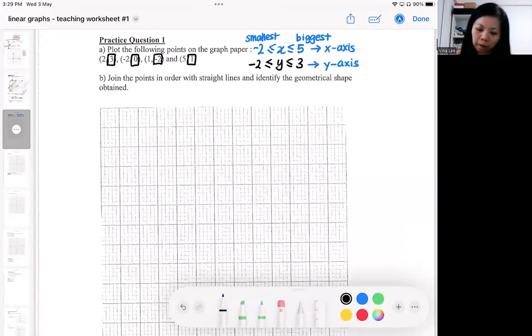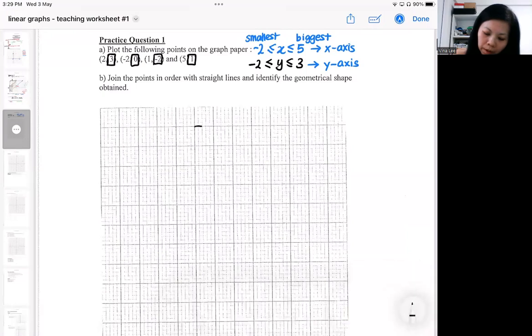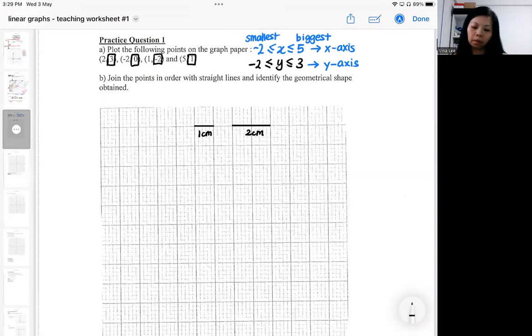So for standard graph paper, if you look at this five little square here, this five little square will be one centimeter. If you take out your ruler and measure five little squares, you should be able to see five little squares equals one centimeter. If you've got ten little squares, you will be two centimeters. So you should be able to see, measure five squares for one centimeter and then ten squares for two centimeters.